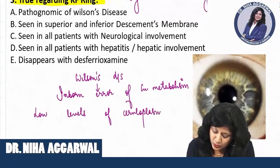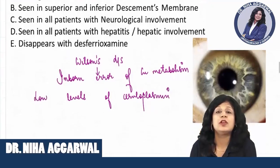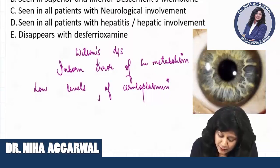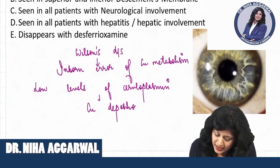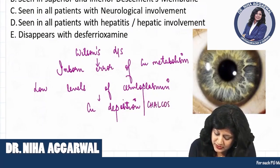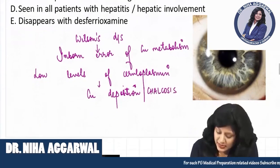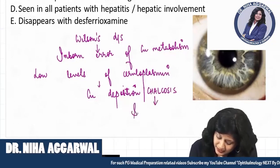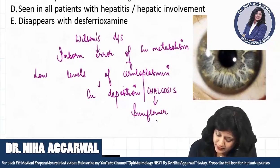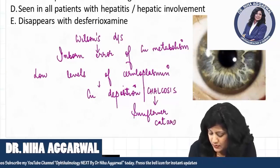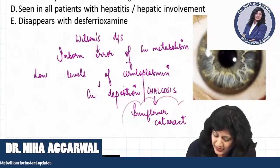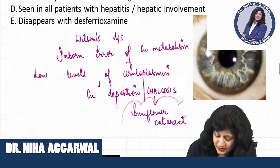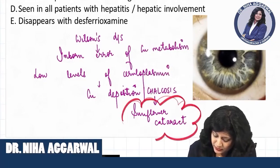Due to the low levels of ceruloplasmin we have copper deposition. What is this called? This copper deposition is called chalcosis, and due to this you get a cataract. What is the name of that cataract? Sunflower cataract. The sunflower cataract is one of the fancy names of the cataract, and fancy names of cataract are quite important and asked so many times.